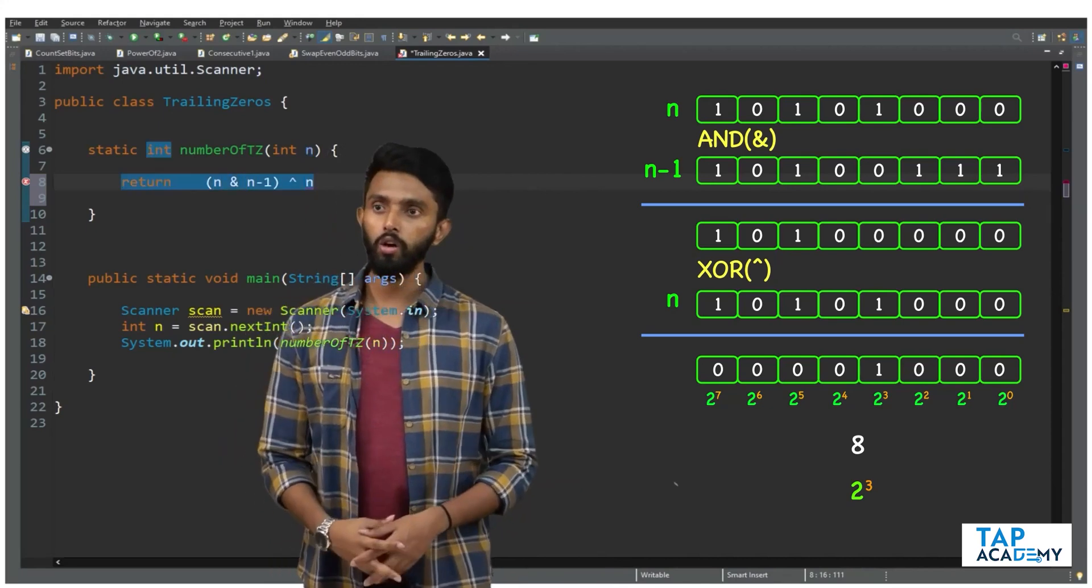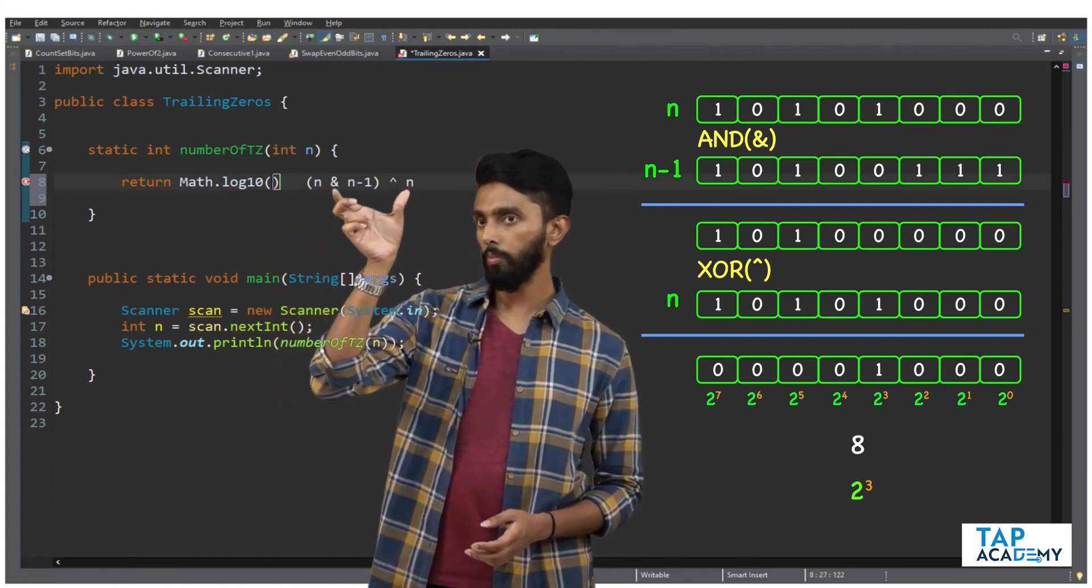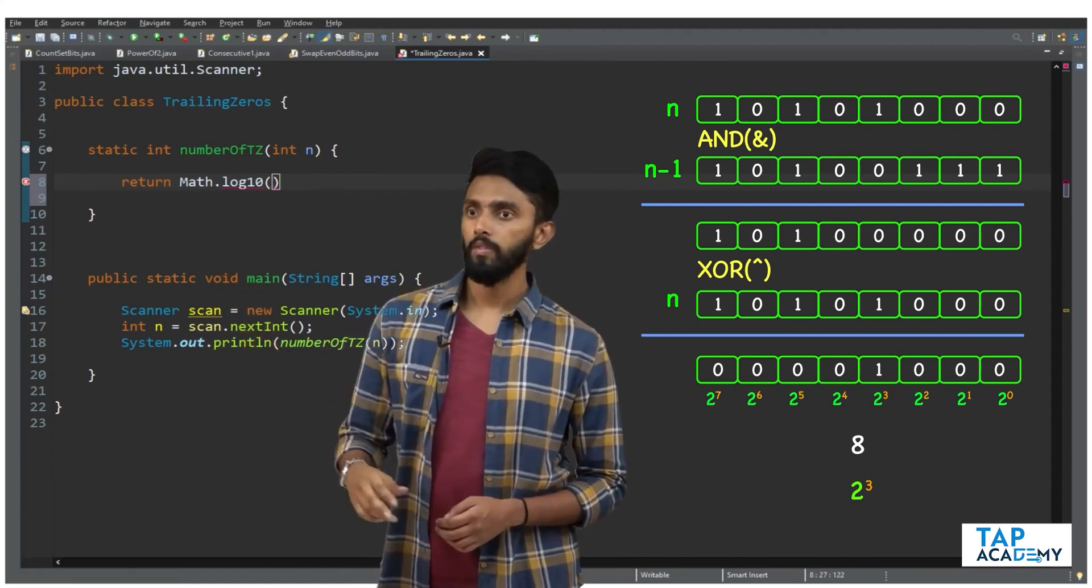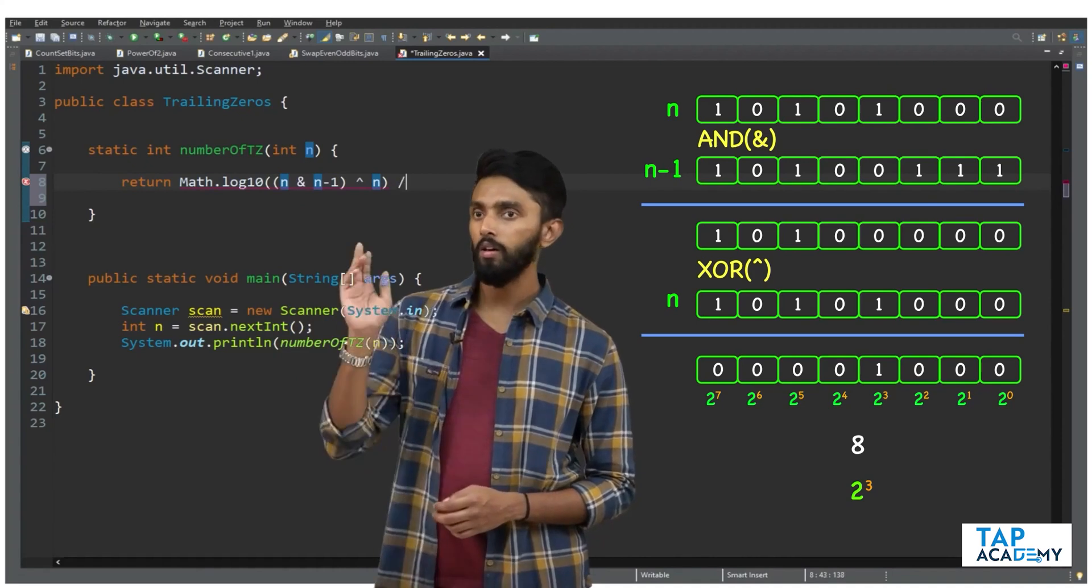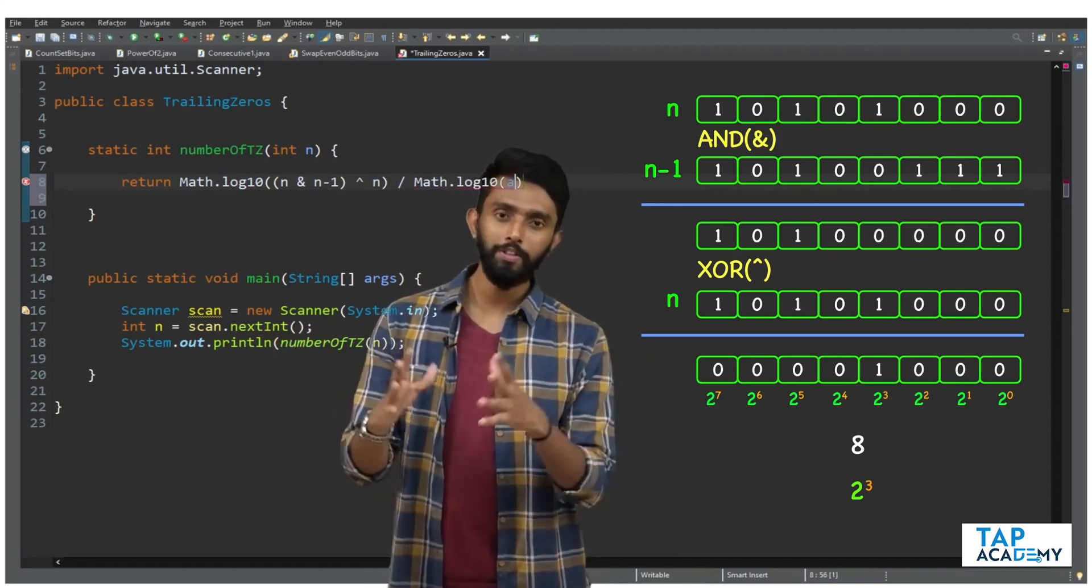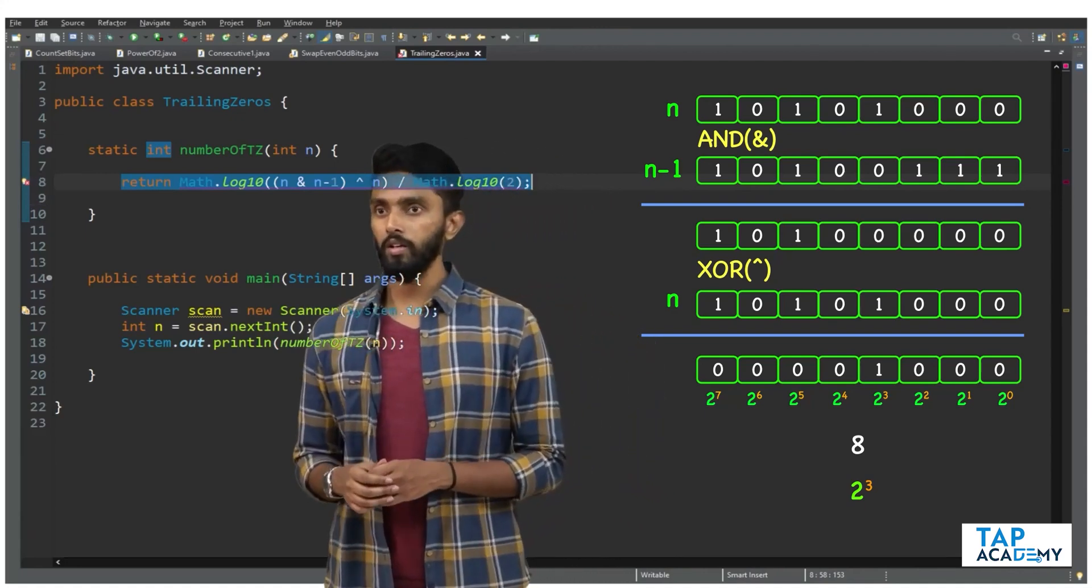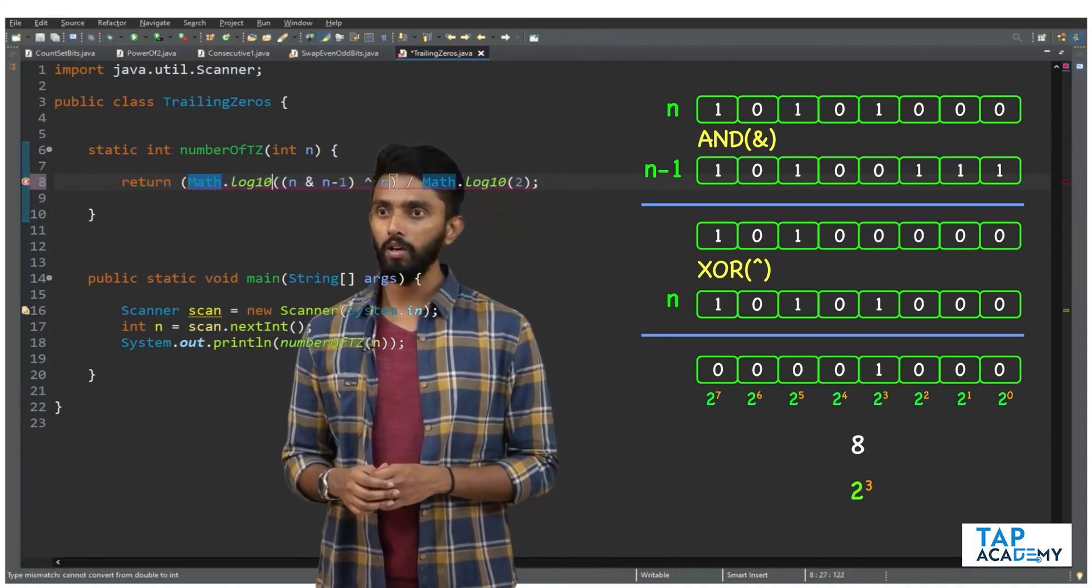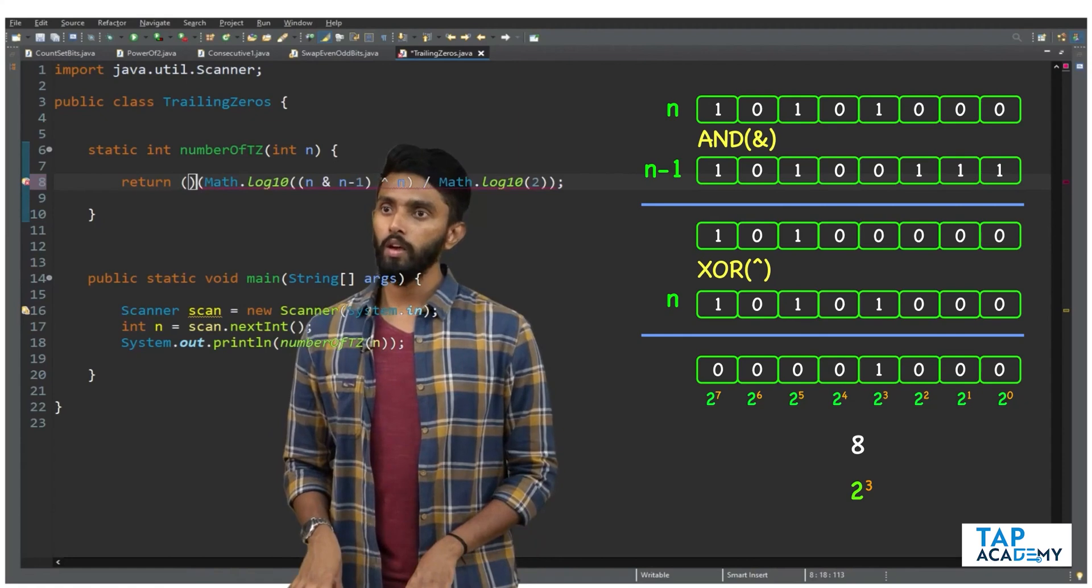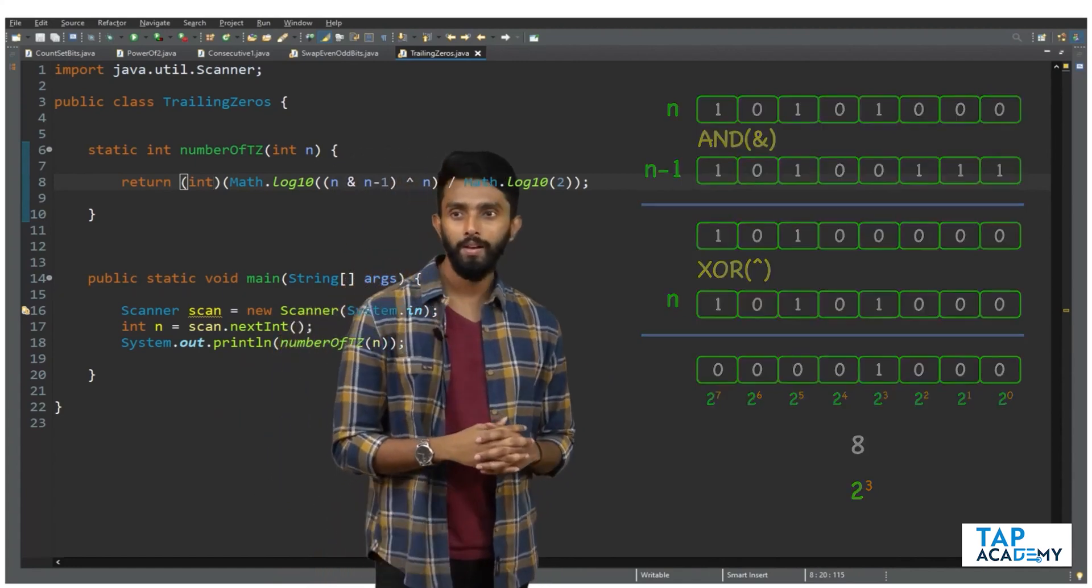It's very simple. I'll use Math.log, log of base 10, and divide by Math.log of 2 to the base 10. I've explained this previously, please go look at it if you forgot. This is giving us an error. We have to typecast it because this will give you double and we are returning int.